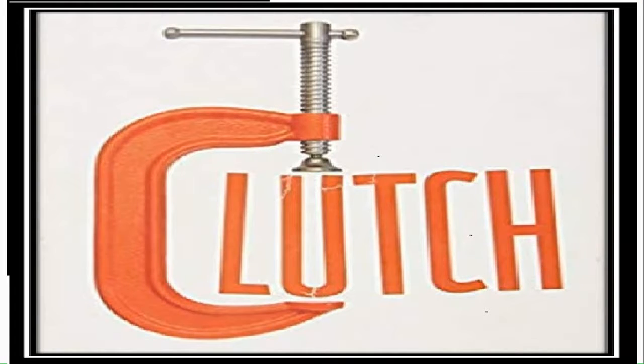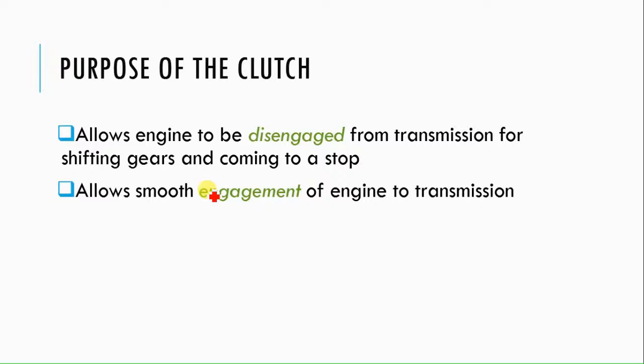The clutch has a specific purpose. It will engage the engine with the gearbox or disengage the engine power from the gearbox. So engaging and disengaging the power is performed by the clutch. It behaves just like a switch: when you switch on, the power is transmitted; when you switch off, the power is disconnected.